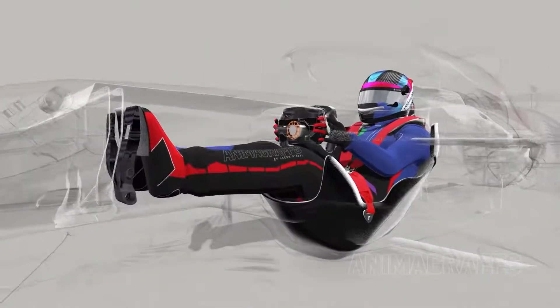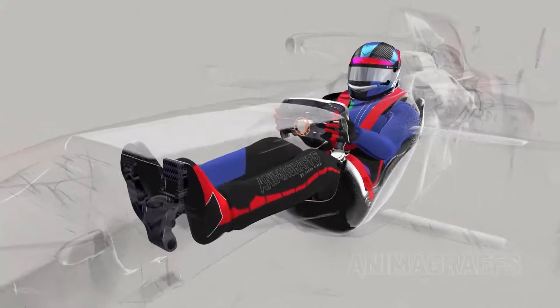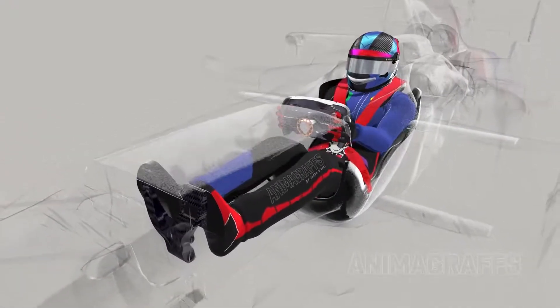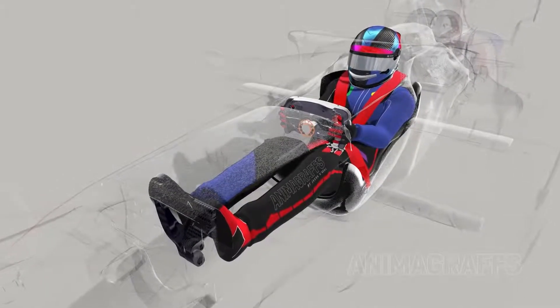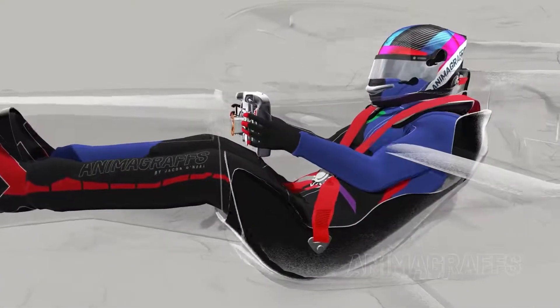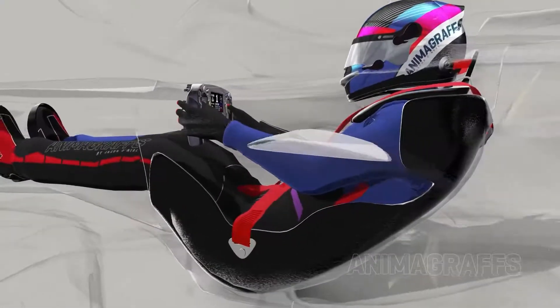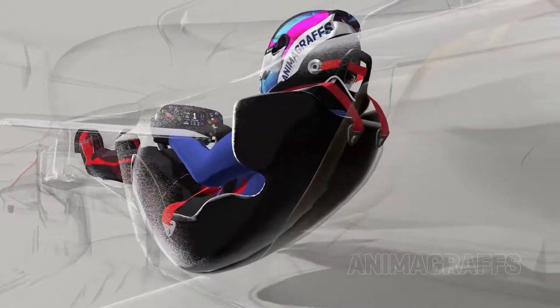F1 racing seats are crafted from molds taken from a specific driver's body. The driver sits in a reclined position, almost like laying semi-upright in a hammock. A six-point harness keeps the driver in place. The seat wraps around the driver's body wherever possible, and safety structures surround the helmet area.